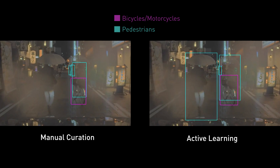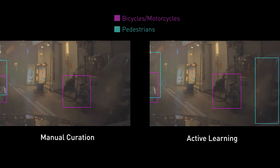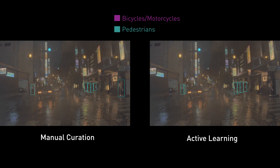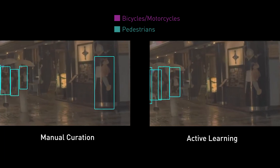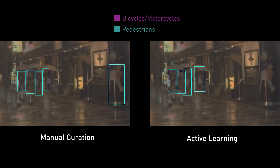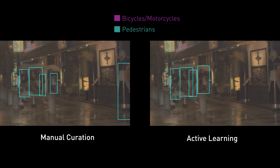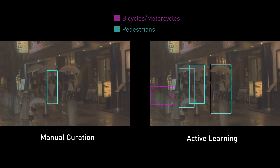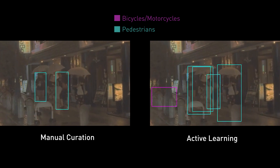However, Drivenet trained with active learning still detects this pedestrian, as well as the pedestrian on the rightmost corner of the image. And here with manual curation, we have a car being incorrectly detected as a pedestrian, while active learning helps avoid this false positive detection and helps the DNN better detect the group of pedestrians.